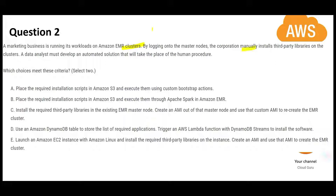Question 2: a corporation has EMR clusters and needs to install third-party libraries on the cluster. Currently this is done manually, and they want an automated solution. We need to select two answers. Option A says place the required installation scripts in S3 and execute them using custom bootstrap — this is correct, it is one valid process. Option B says place scripts in S3 and execute through Apache Spark, which would be costly — so B is wrong.